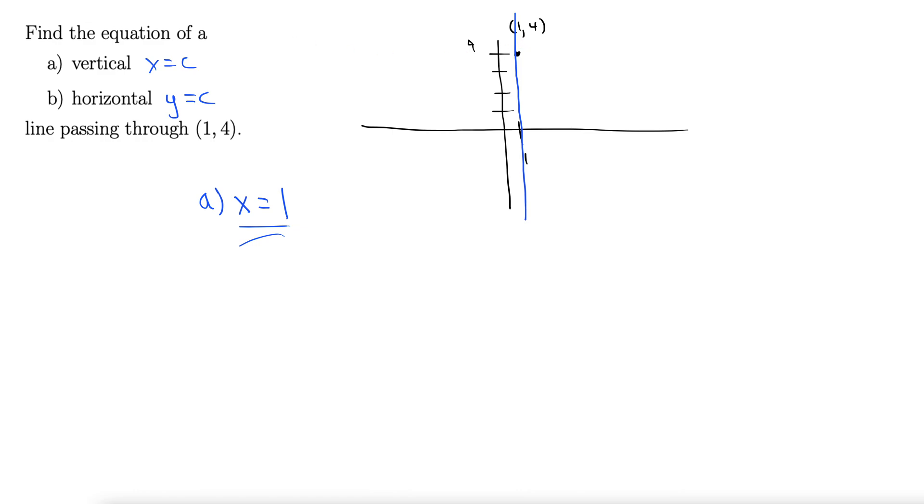Alright, for part b, we want a horizontal line. So horizontal line, and a horizontal looks like the horizon. There we go. So part b is of the form y equals something, y equals the constant c.